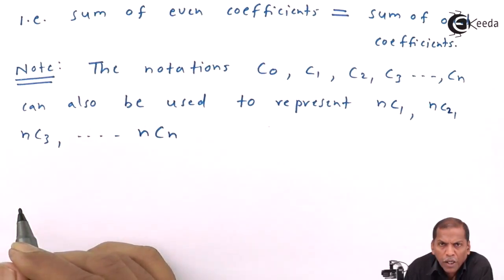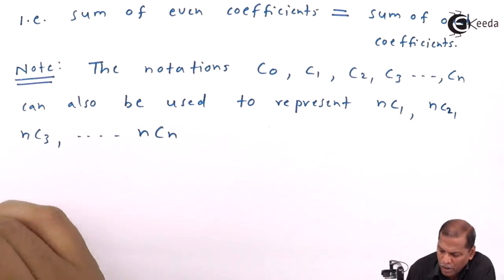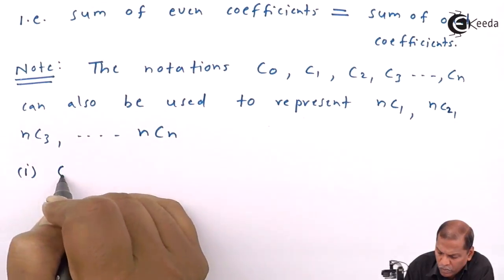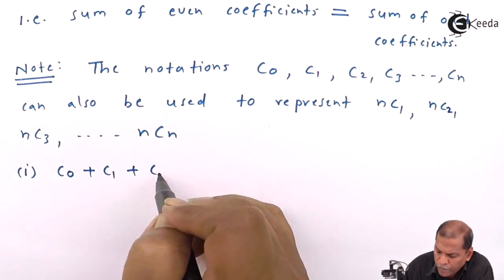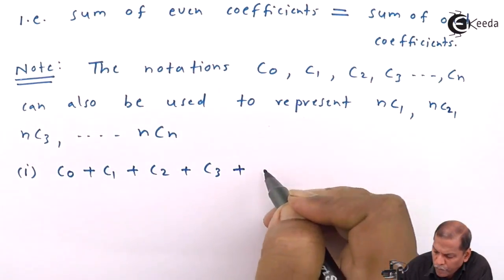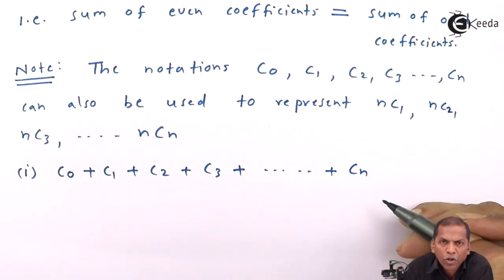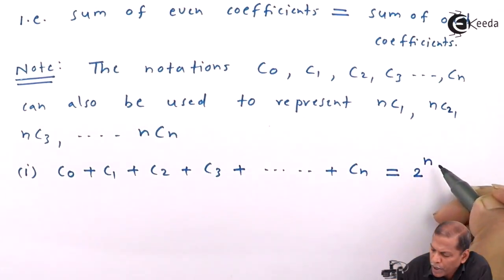So by using these notations, the above two results—i.e., result 1 and result 2—can also be written as: C0 + C1 + C2 + C3 + ... + Cn = 2^n.